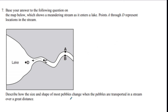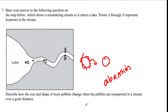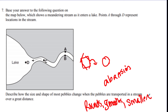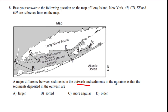Last question: describe how the size and shape of most pebbles change when transported in a stream over a great distance. This relates to the sugar cube lab — cubes roll around and break off their edges, turning circular over time. That's what happens in rivers when particles are dragged along the bottom, called abrasion. So they round out, become smoother, and get smaller. The answer for size and shape: round and smaller. The outwash has sorted sediment because it's made from water; the moraine is just unsorted deposits.